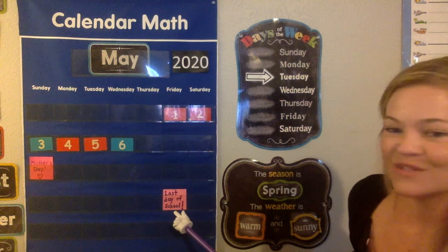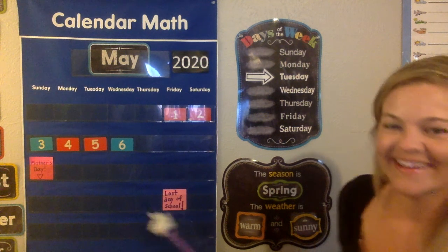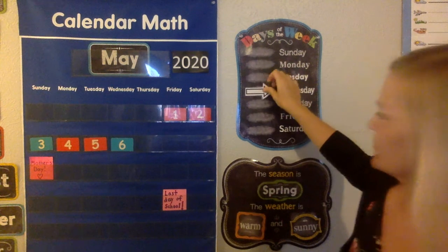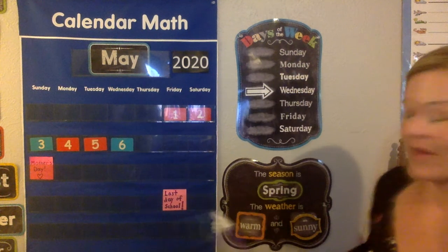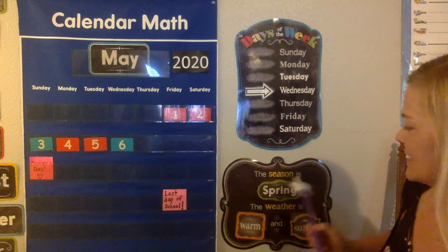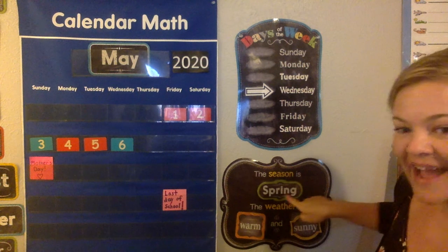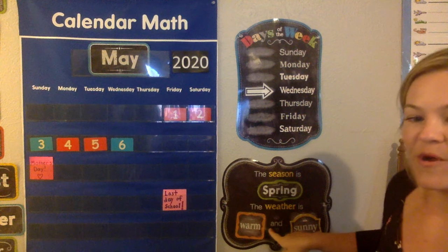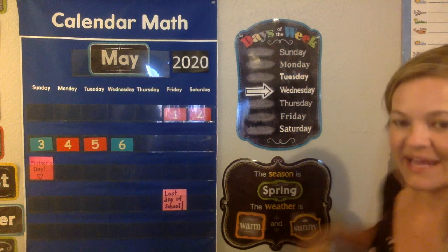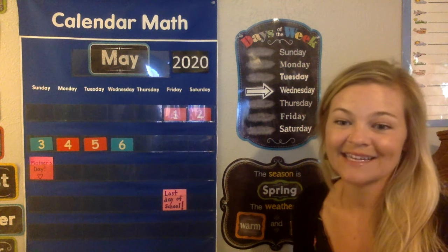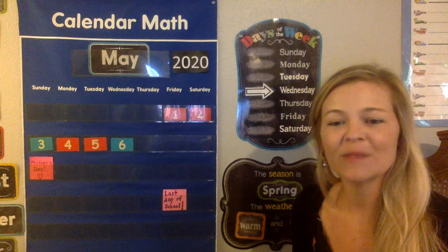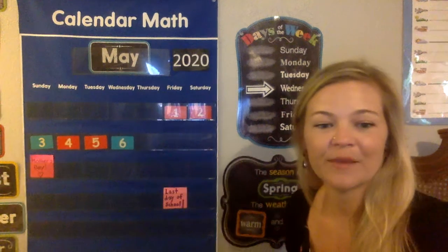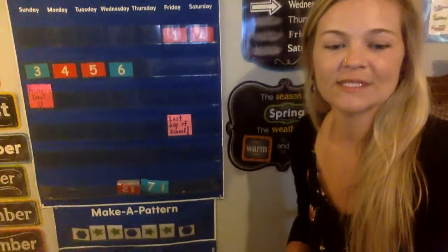And then we have last day of school down here. I'm going to move my arrow from Tuesday to Wednesday. Let's go over the weather. The season is spring with that I-N-G. The weather is warm and sunny — it was kind of cloudy yesterday but we're back to sunny today. It's kind of warm in the mornings and the afternoons get pretty hot.